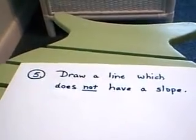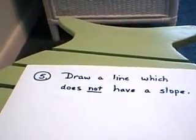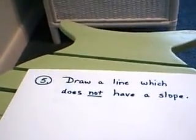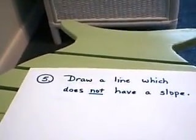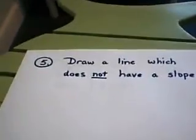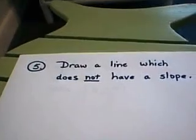A positive slope would emulate sort of walking uphill. So, from left to right, the line would be rising. A negative slope line, from left to right, the line would be falling. Now, here we're asked to draw a line that does not have a slope.